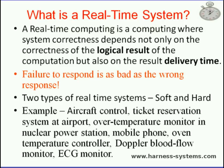What is a real-time system? Real-time computing is computing where system correctness depends not only on the correctness of the logical result but also on the result delivery time. There are two types of real-time systems: soft and hard. In soft real-time systems, tasks are performed as fast as possible but results do not have to finish by a specific time. In hard real-time systems, tasks have to be performed not only correctly but on time. Most real-time systems have a combination of soft and hard requirements. Examples include aircraft control, ticket reservation systems at airports, over-temperature monitors in nuclear power stations, mobile phones, oven temperature controllers, Doppler blood flow monitors, and ECG monitors.